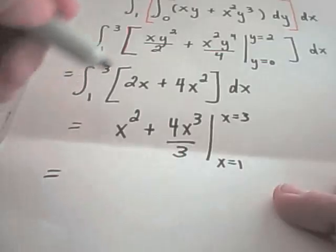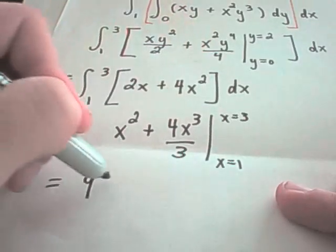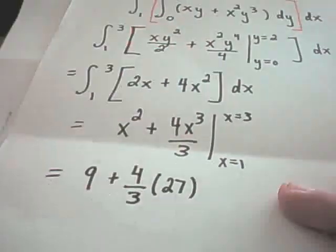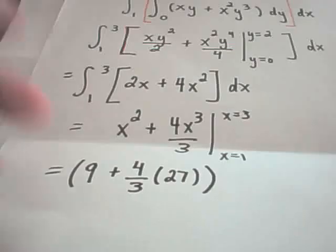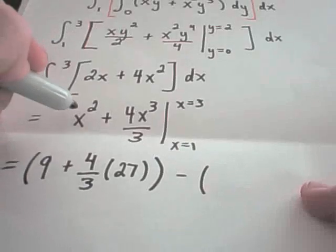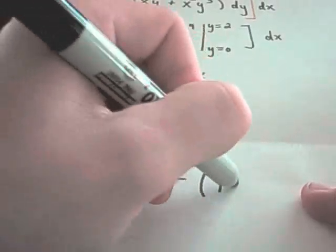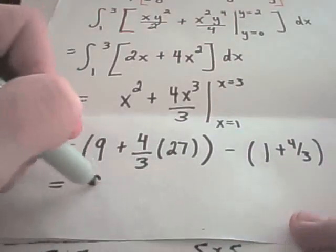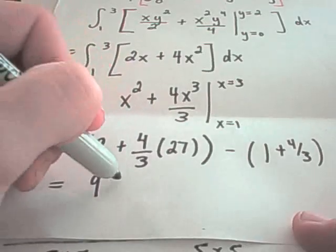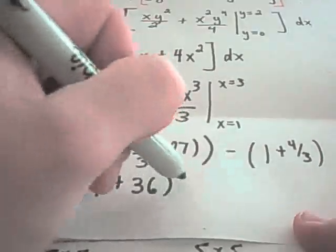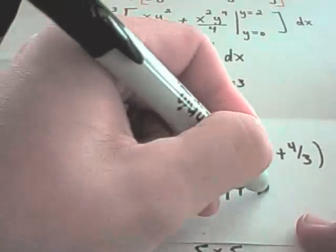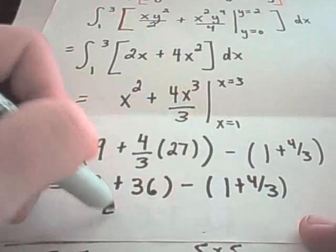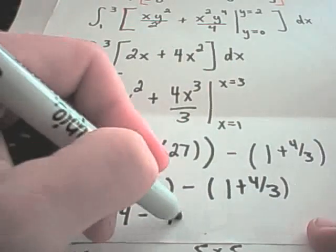So we'll plug in our upper limit of integration first. So 3 squared is 9, plus 4 thirds times 3 cubed, which is going to give us 27. That's our upper limit of integration. And then we'll simply subtract away the lower limit. So if you plug 1 in, you'll get 1, and then we'll get a positive 4 thirds. And now we can simply just grind this down a little bit. So we'll have 9. 27 over 3 is 9. 9 times 4 is 36. So 9 plus 36, that's 45. 45 minus 1 is 44. I'll have 44 minus 4 thirds.